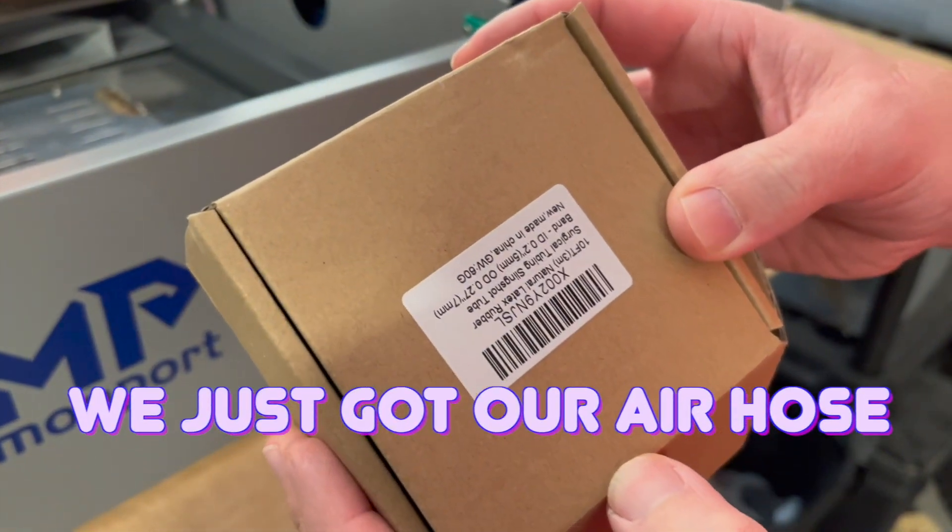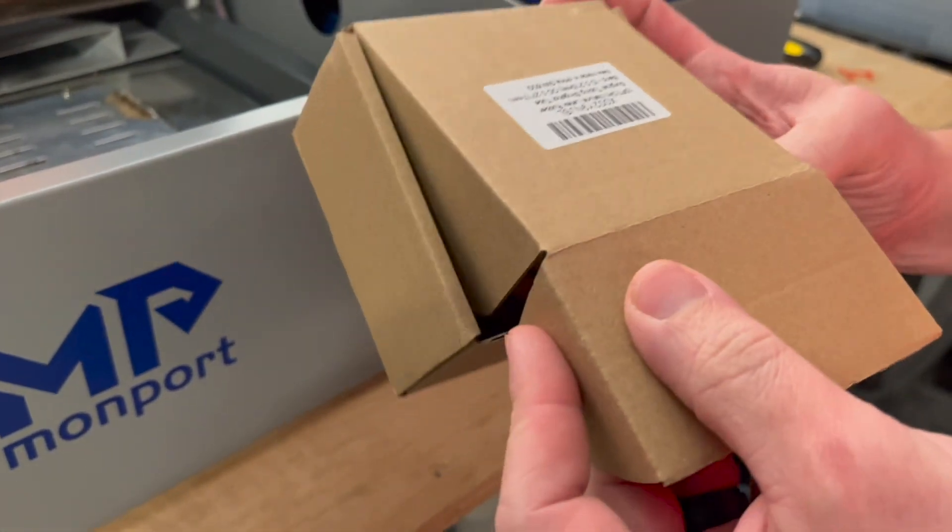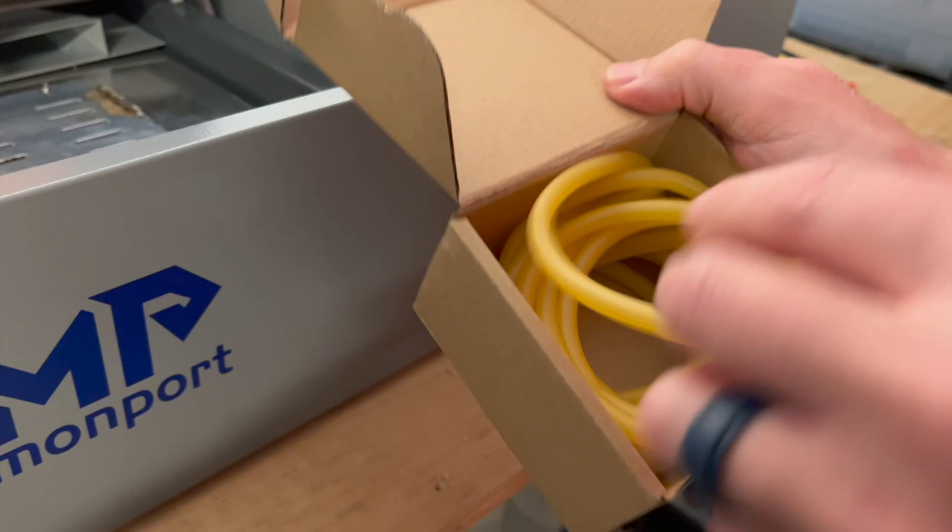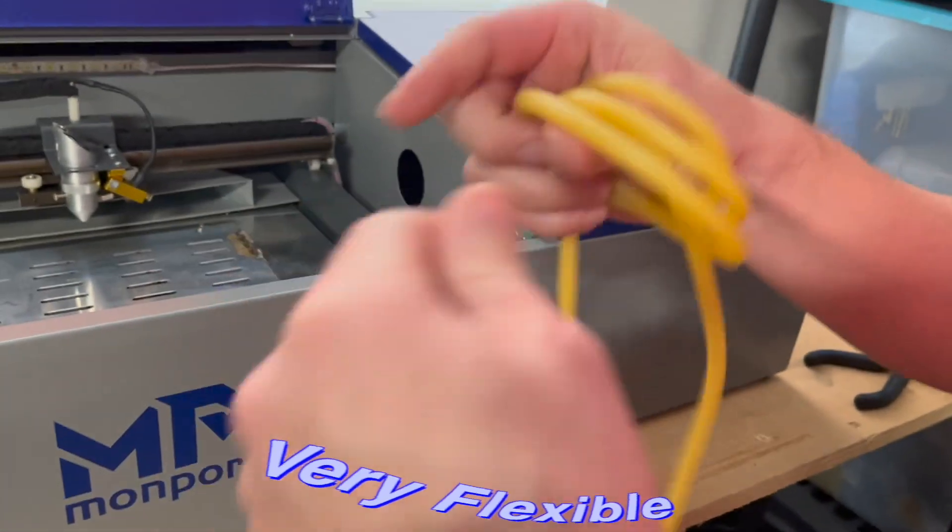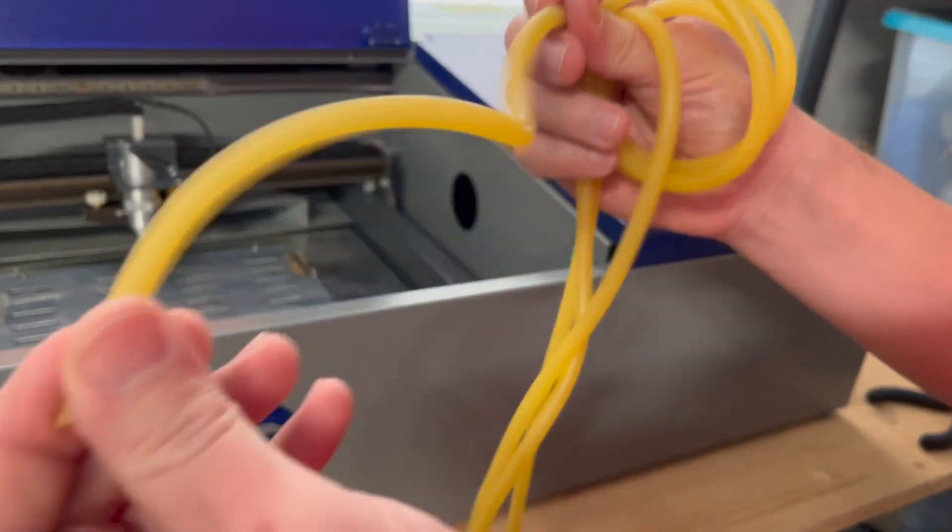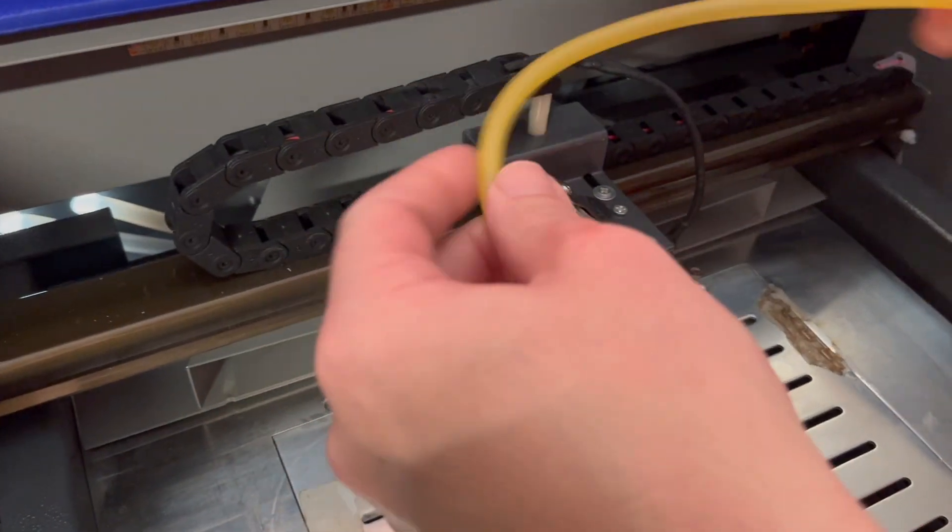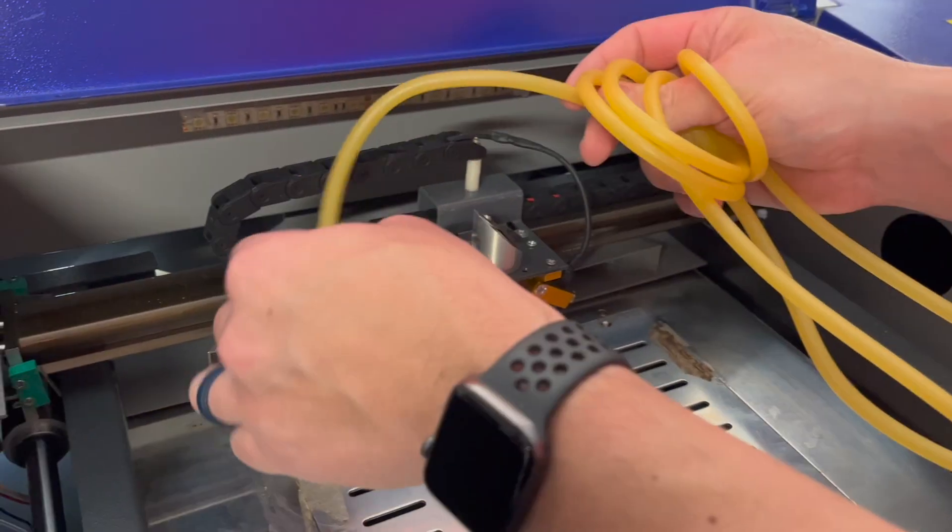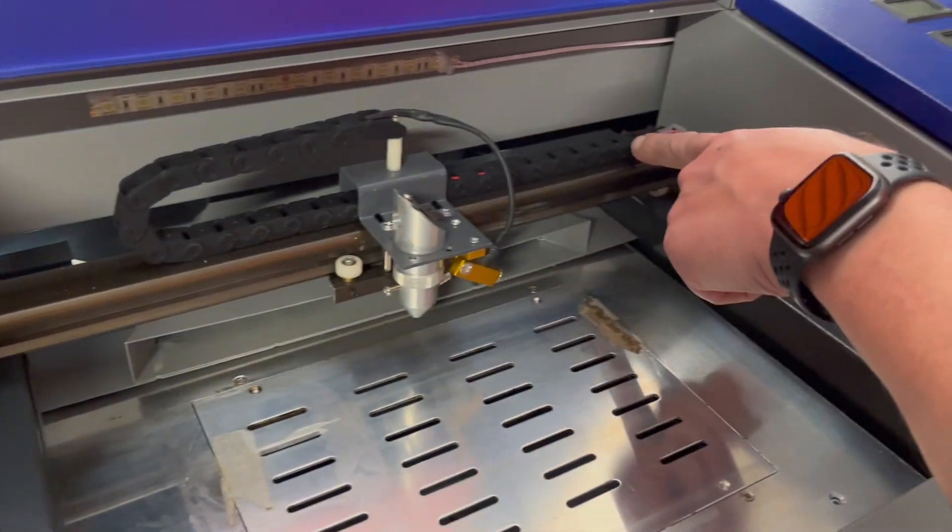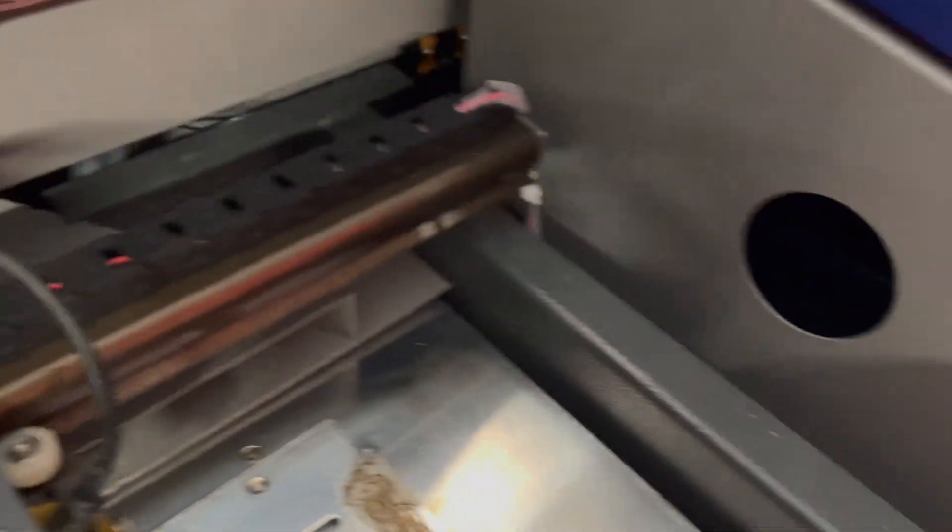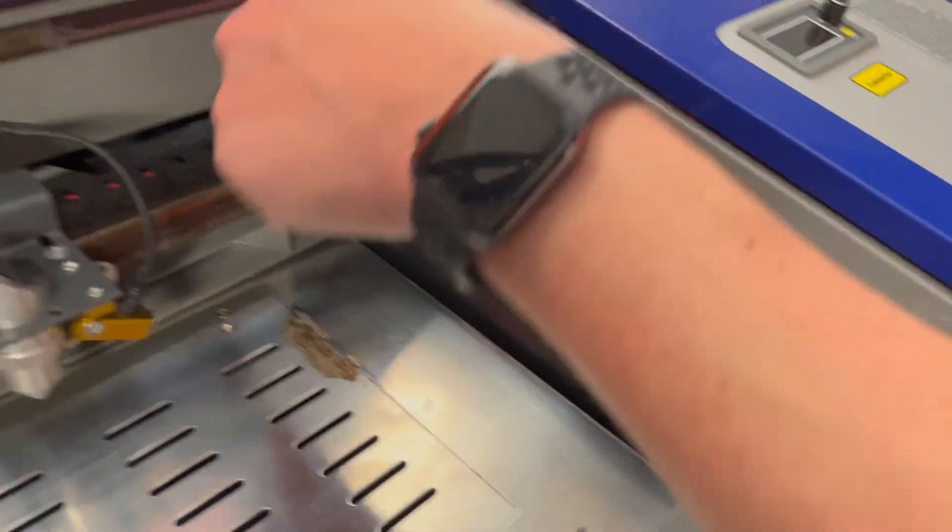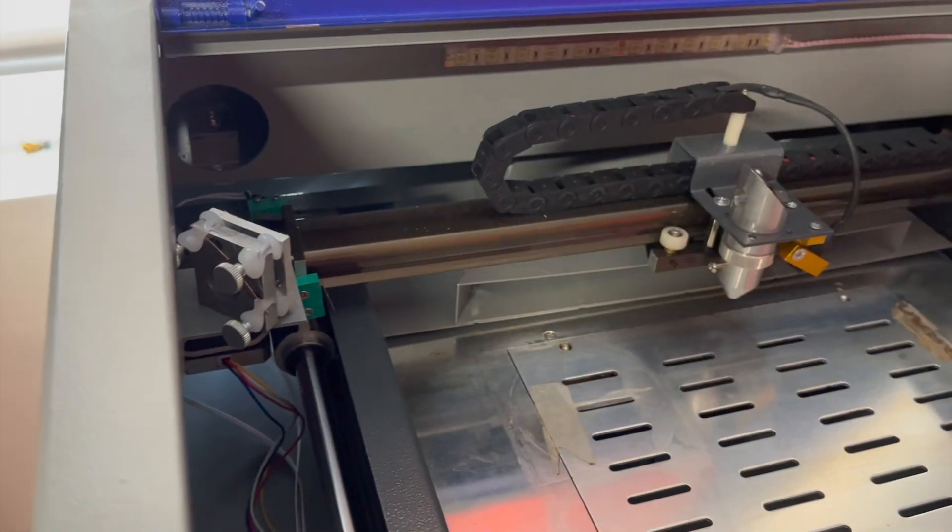All right, so we just got our air hose and what we ended up getting is a latex rubber, which is very important that you use something that is very flexible. As you can see here, there's no resistance in this moving because it's got to move in the gantry and everything. So we have to find a way to route this within the gantry so that we can route it along the side here and up with the rest of the wires and then back out the rear of the machine. So that's the plan.